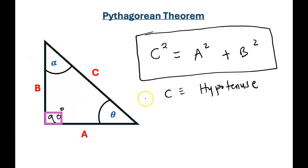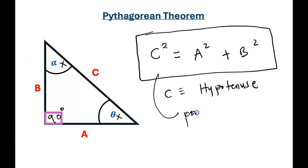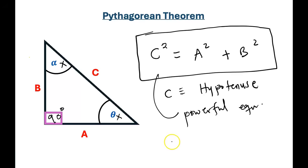For now, let us not concentrate on the two angles theta and alpha. We are only interested in how the three sides of this right triangle are related. In simple form, the Pythagorean theorem relates these three sides in this powerful equation. C — which is the length of the hypotenuse — is the side that is opposite to the 90-degree angle. That, in a nutshell, is all what the Pythagorean theorem is about.